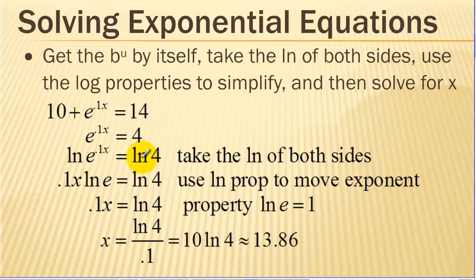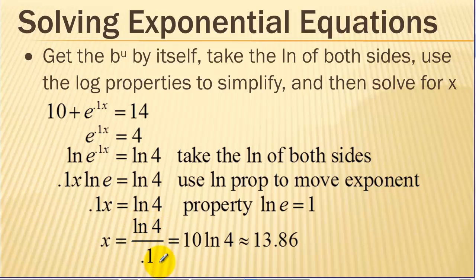By taking the ln of both sides, using the logarithm property we learned in the last video, we're able to get the x out of being an exponent and make it a regular linear variable. Now we just have to solve for x by dividing by 0.1. We can pull out our calculator and calculate the ln of 4 divided by 0.1, which is also 10 times the ln of 4, and we get approximately 13.86. If we put that number back into our original equation, it would check out.